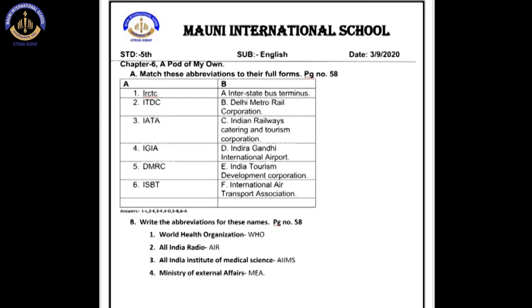After that, Exercise B, in which we have to write the abbreviations of these names. We have to write the short forms of the given names. For example, World Health Organization.